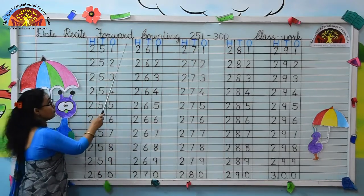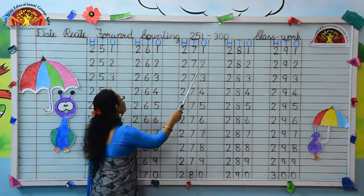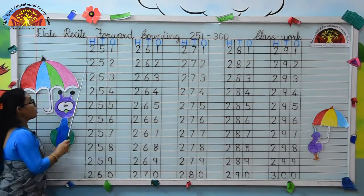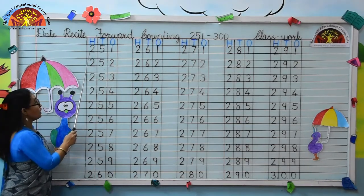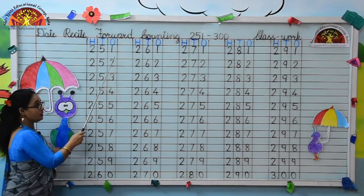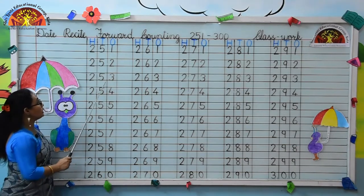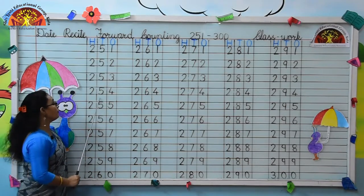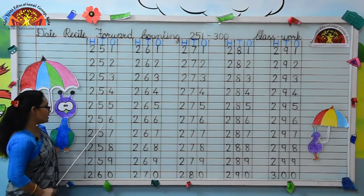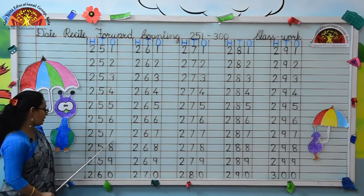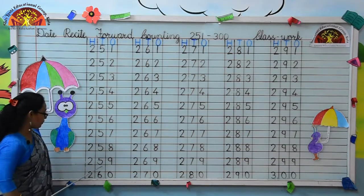Recite forward counting from 251 to 300. Kids, what is written here? Yes, 251. Next: 252, 253, 254, 255, 256, 257, 258, 259.